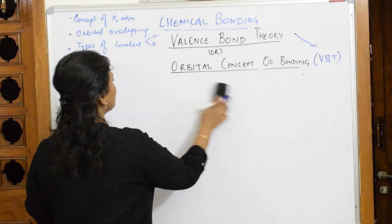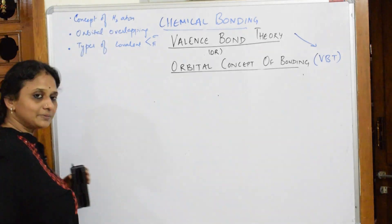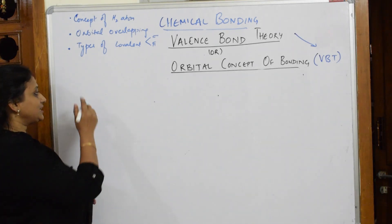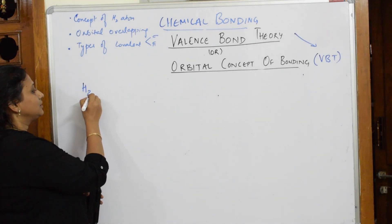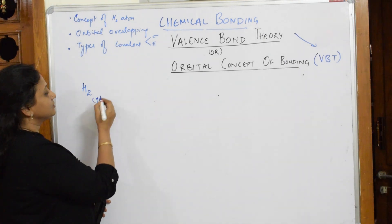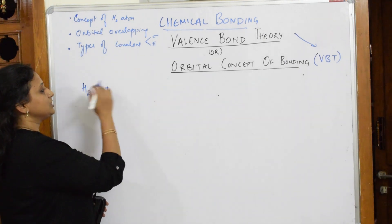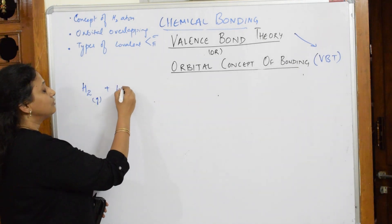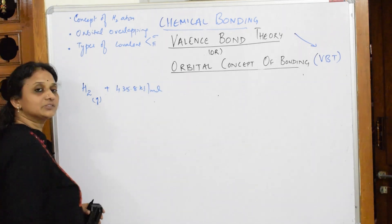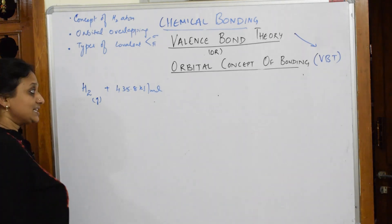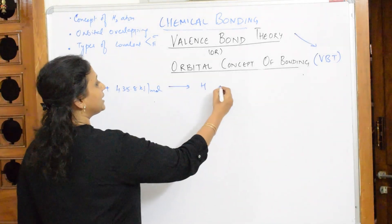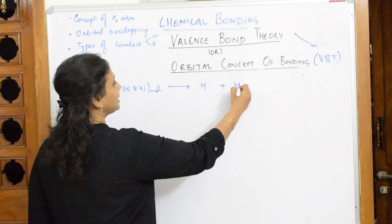When I speak about the hydrogen concept, basically when I take a hydrogen molecule, I'm going to supply a certain amount of energy to this — almost 435.8 kilojoules per mole of energy supplied. When I supply a certain amount of energy to this, immediately it will break up into hydrogen atom A and hydrogen atom B.